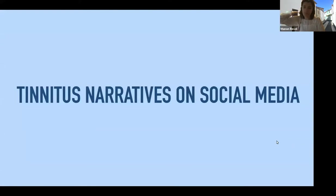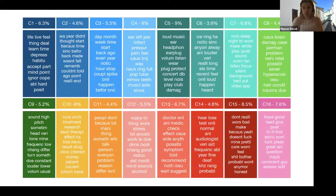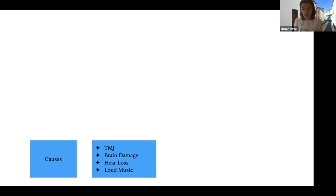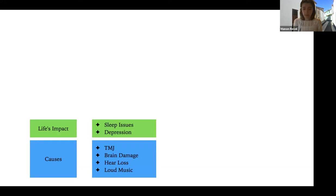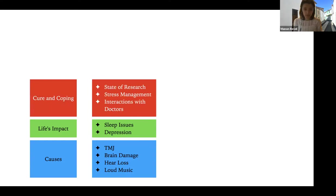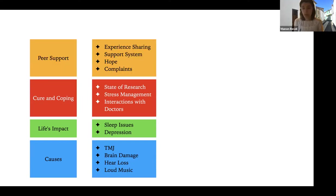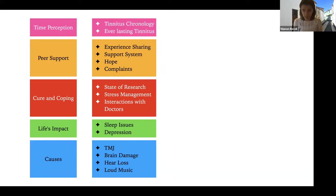Now let's talk about the results. Rather than spending too much time on raw word lists, I want to show you the digested version. We grouped topics together: TMG, brain damage, hair loss, and loud music all appear as potential causes of tinnitus. We also find topics around life impacts — people discussing sleep issues and depression — and cure and coping mechanisms covering research, stress management, and doctor interactions. There is a peer support overarching topic about sharing experiences and discussing conditions hopefully or hopelessly. Finally, there is the time perception topic: the chronology of tinnitus and the issue of everlasting tinnitus.